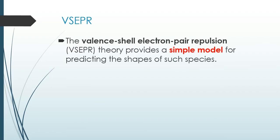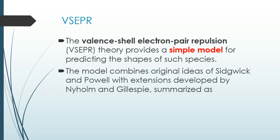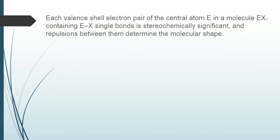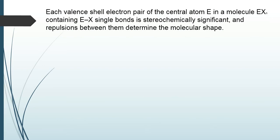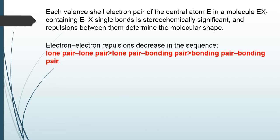This is a question based on VSEPR theory. VSEPR theory — valence shell electron pair repulsion theory — provides a simple model for predicting the shape of such species, mainly halide species. Each valence shell electron pair of the central atom E in a molecule EXₘ is stereochemically significant, and repulsion between them determines the molecular shape. The shape of the molecules is determined by the electron repulsions.